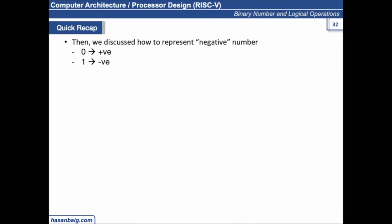We also discussed how we can represent negative numbers — how numbers are represented in binary, hex, and octal, and how to convert a number from positive to negative using complements. We discussed the convention: when the leftmost bit is 0 it represents a positive number; when the leftmost bit is 1 it represents a negative number. If a number is 4-bit, the leftmost bit represents its sign; if 8-bit, the 8th bit represents its sign.